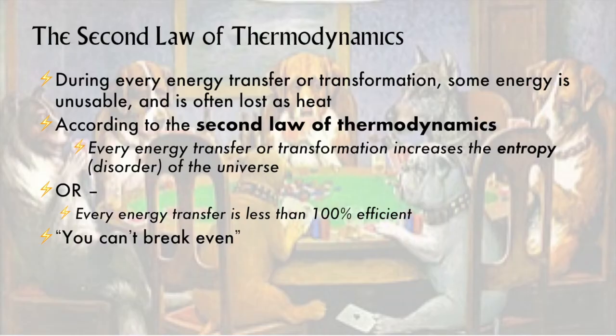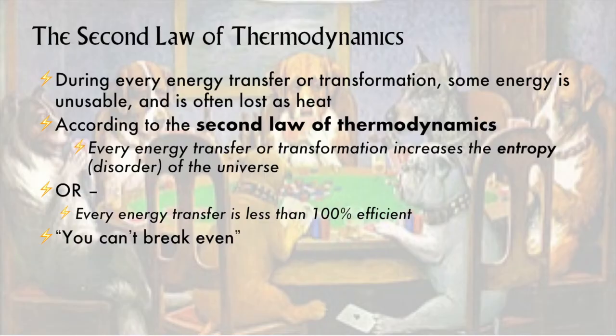The second law states that every energy transfer is inefficient. This is the law that explains why perpetual motion machines cannot exist. Even stars like our own sun may persist for billions of years but will eventually run out of fuel and collapse under their own gravity. Since energy can't be lost — see law one — we have to introduce an accounting tool to explain the inefficiency of energy transfers. This accounting tool is called entropy. Entropy is also called disorder, though it's a more scientific kind of disorder — not the kind where your mom says there are seven entropies in your room.